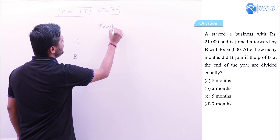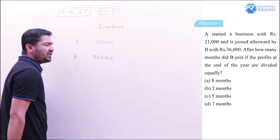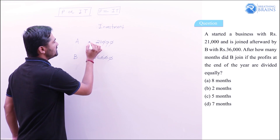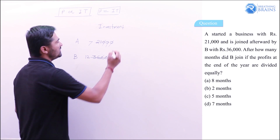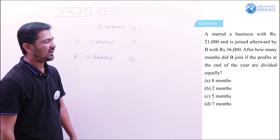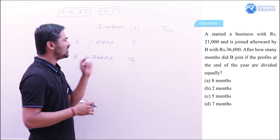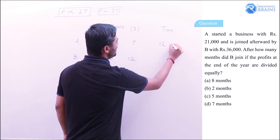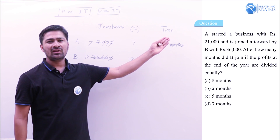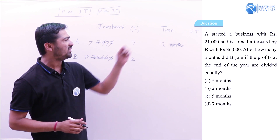Investment by A is ₹21,000 and by B is ₹36,000. The ratio of investments, after cancelling common zeros and dividing by 3, becomes 7 : 12. A started from the beginning, so A's time is 12 months. We need to find B's time in months since the question asks after how many months B joined.